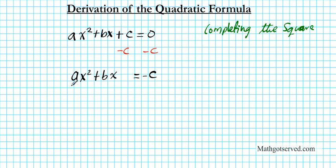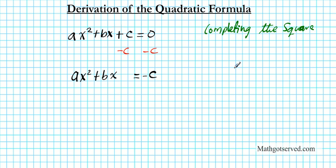Now to complete the square on the left side, I need to add a term here to make this a perfect square trinomial. But I need the first term to be a perfect square. This a is getting in the way, so I need to get rid of it so that I will just have x squared by itself, because x squared is a perfect square — when I take the square root of x squared I get x. So first, let's clean up the first term to make sure it is a perfect square.